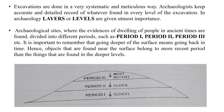Archaeological sites where evidence of ancient human dwelling is found are divided into different periods such as Period 1, Period 2, Period 3, etc. It is important to remember that going deeper below the surface means going back in time. Hence, objects found near the surface belong to a more recent period than things found at deeper levels.